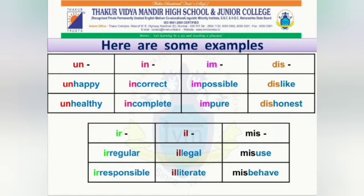Here are some examples. Un-: unhappy, unkind. Dis-: dislike, dishonest. Ir-: irregular, irresponsible. Ill-: illegal, illiterate. Mis-: misuse, misbehave.